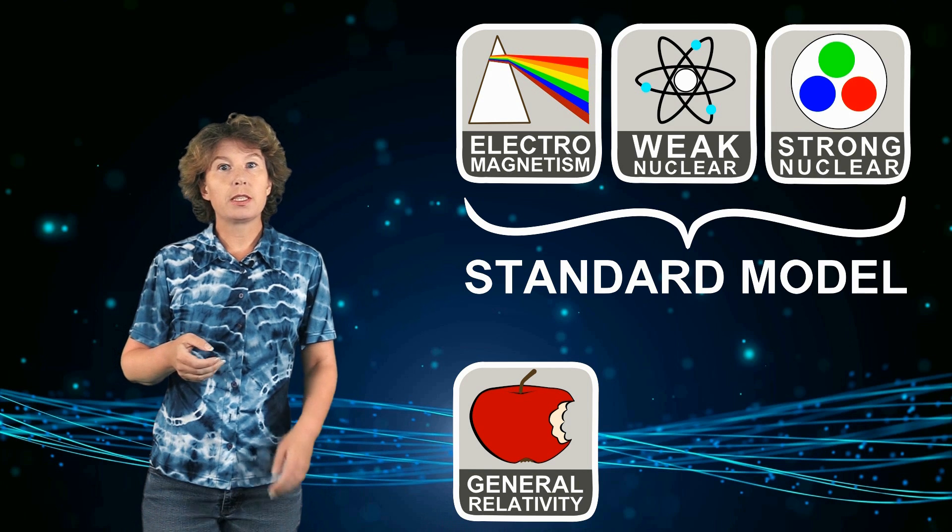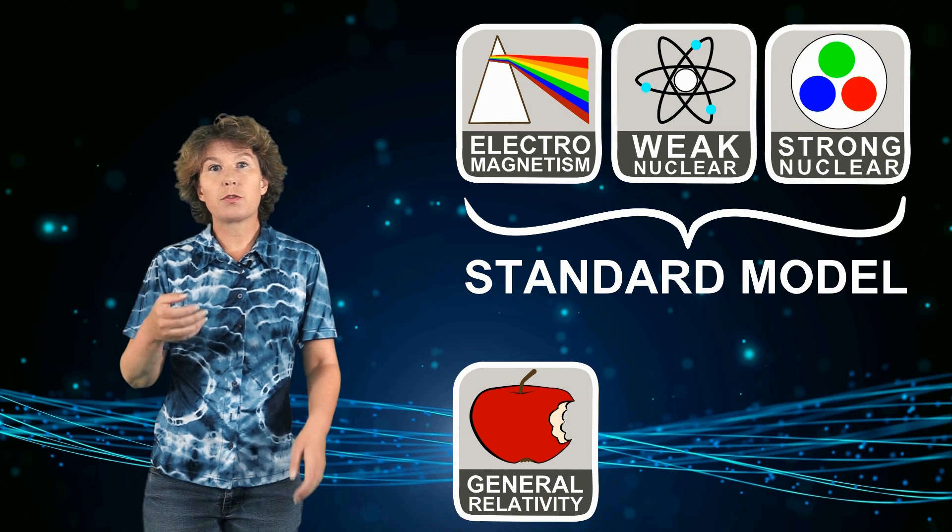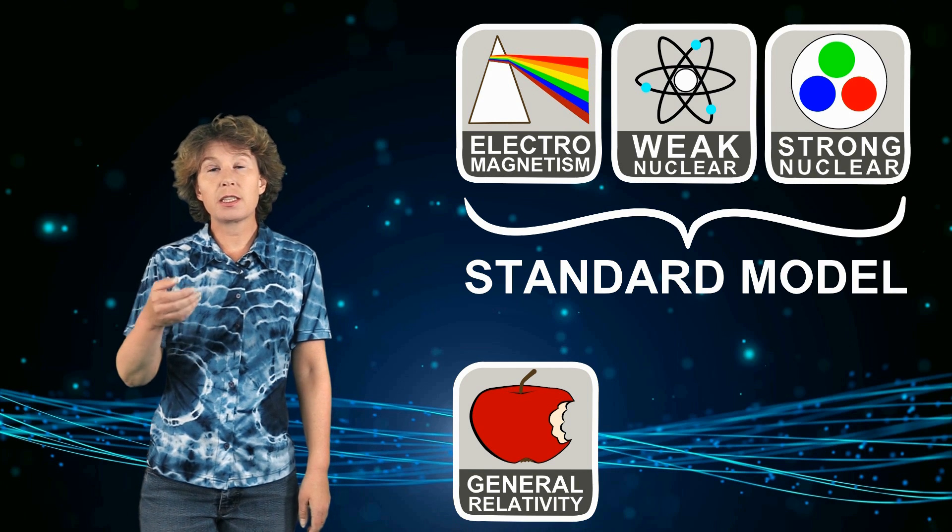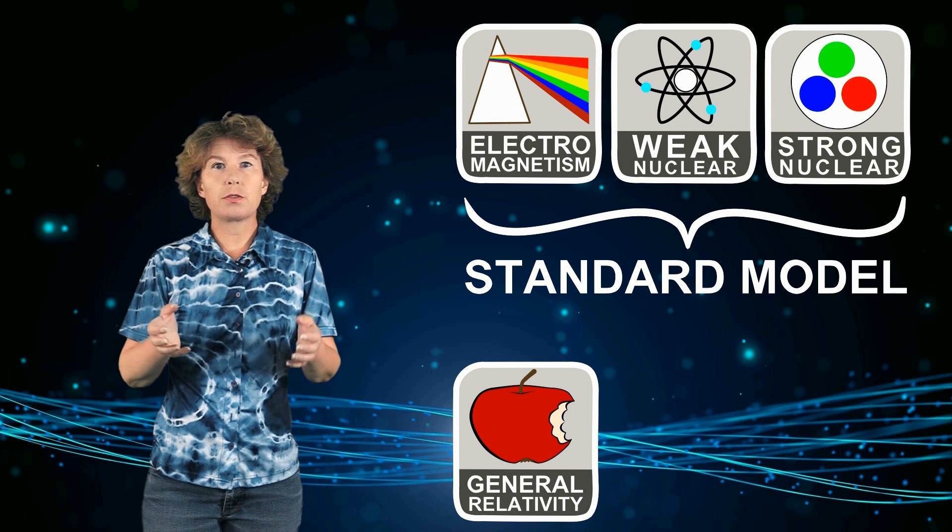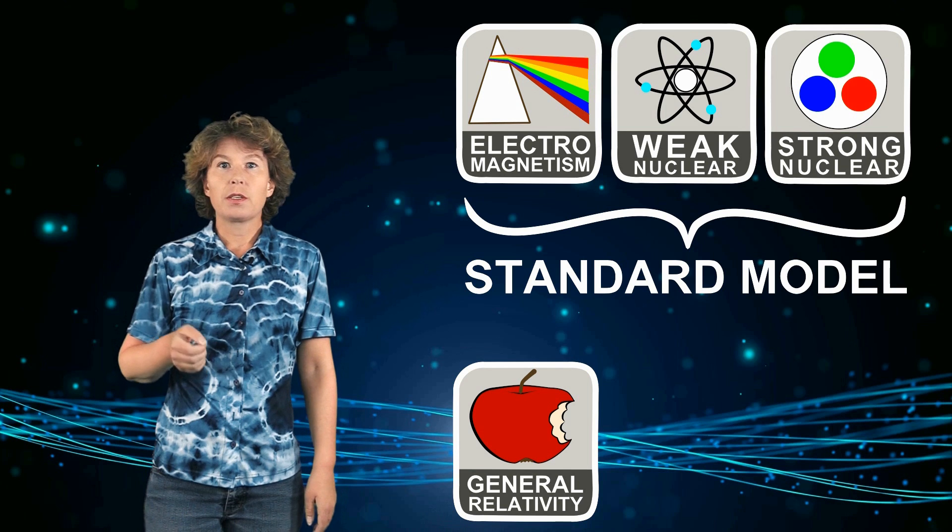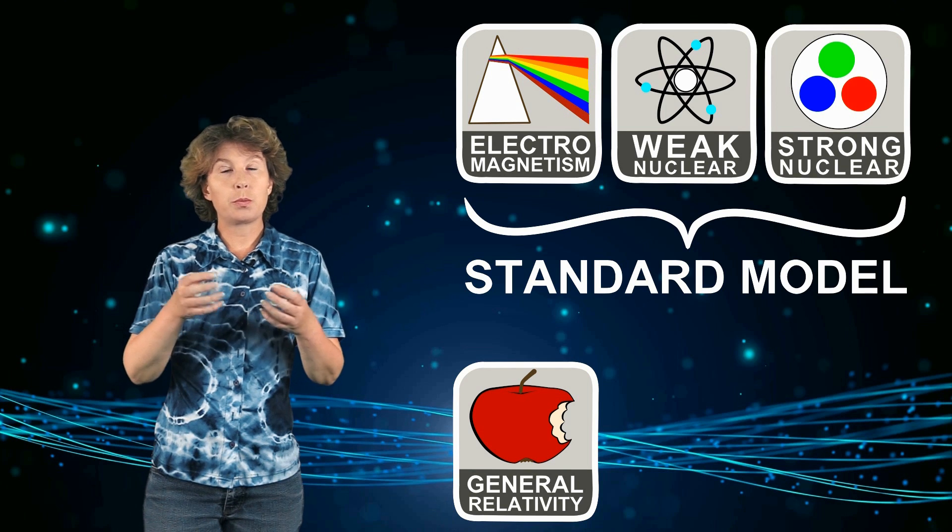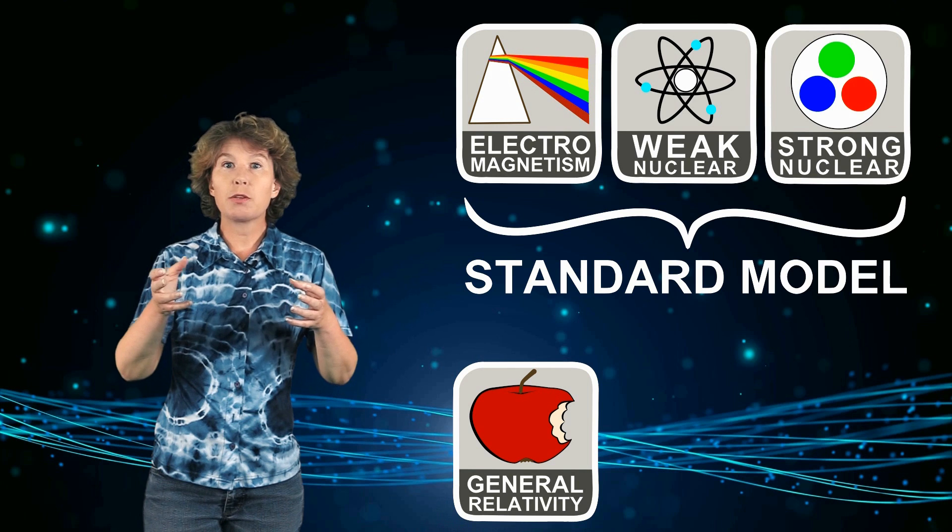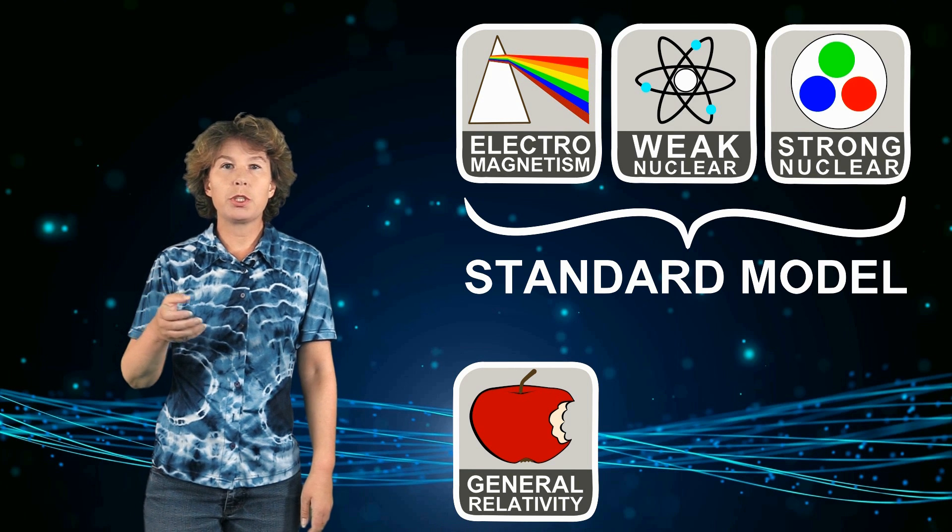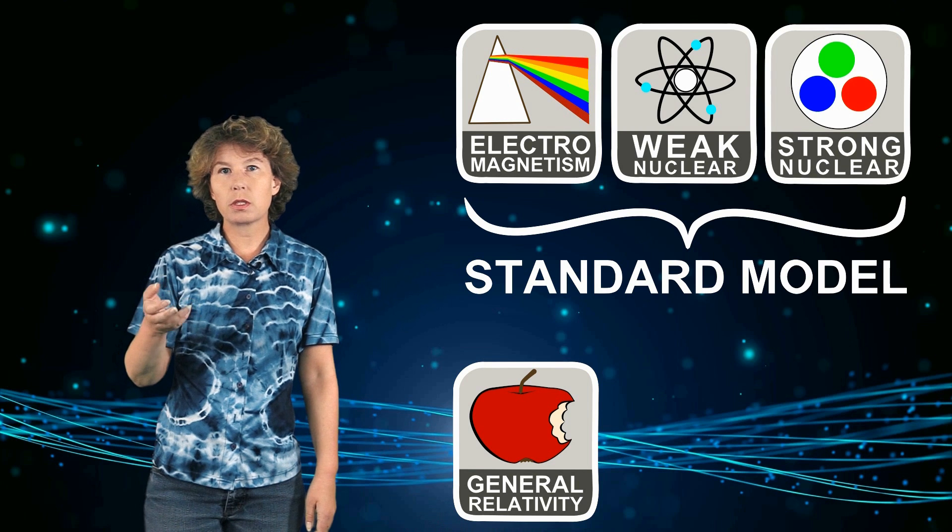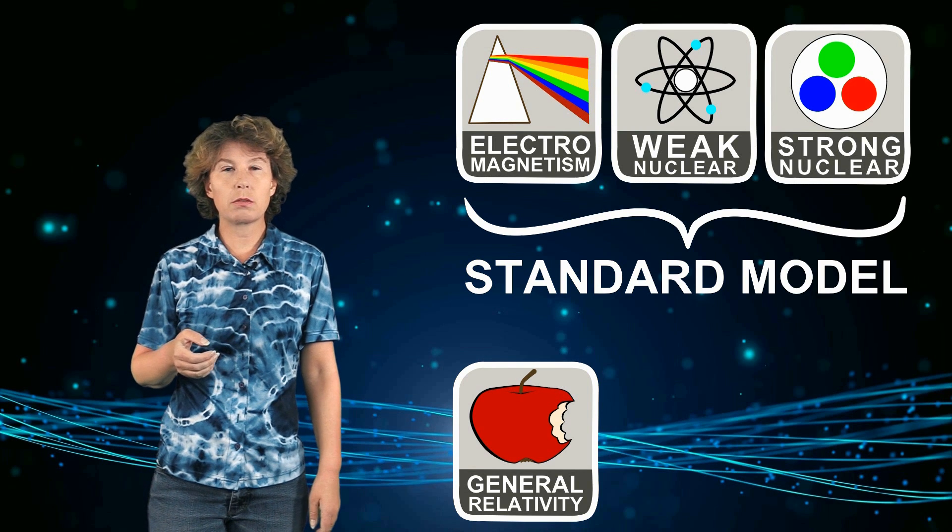Gravity, however, is described by Einstein's theory of general relativity and does not know anything about quantum mechanics, so it stands apart from the three other forces. That's a problem because we know that all the quantum particles in the standard model have a gravitational pull. But we do not know how this works. We just do not have a theory to describe how elementary particles gravitate.